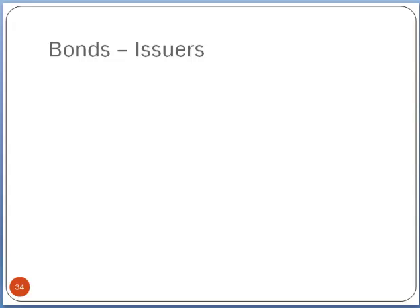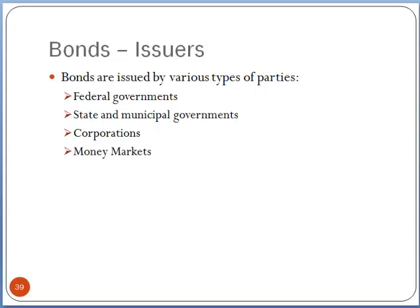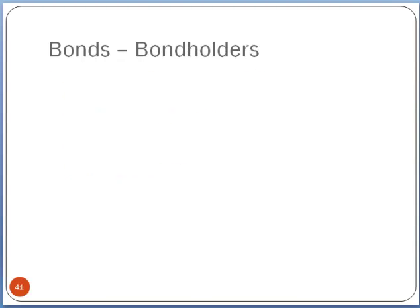Let's talk a little more about issuers — who are these people? Bonds are issued by various types of parties. For example, the federal government — the U.S. government issues bonds when there's a revenue shortfall, when taxes don't cover all the expenses. State and municipal governments will issue bonds when they have specific projects, like fixing a road or building a structure. Corporations issue bonds. And you'll see bonds related to money markets, as well as more complex bonds like mortgage-backed or asset-backed securities, collateralized debt obligations, and so on.